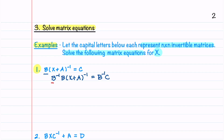Notice that we're multiplying by B inverse on the left for the left side of the equation, which means we also have to multiply by B inverse on the left for the right side of the equation. The order that you multiply matrices matters. On the left, we're going to get the identity matrix from B inverse B, and then we have X plus A inverse, and that's equal to B inverse times C. We don't need to write down the identity, so we have X plus A inverse is equal to B inverse C.